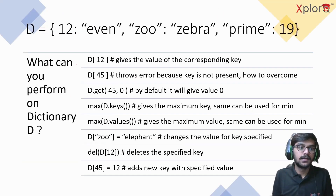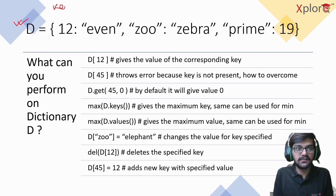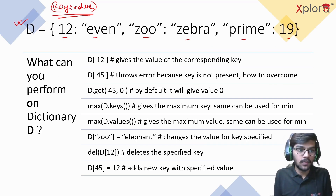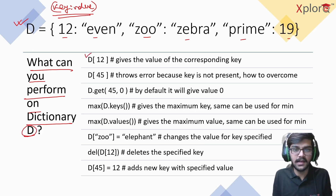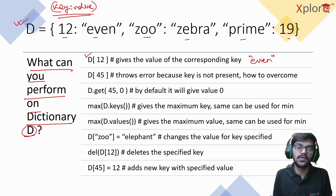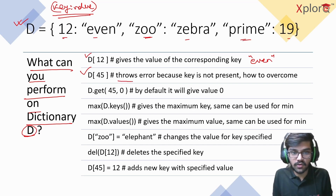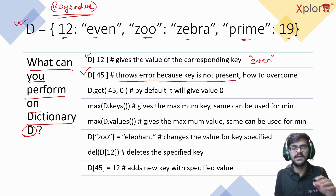Now let's move on to dictionaries. A dictionary has key-value pairs. In dictionary d: 12 is a key with value 'even', 'zoo' is a key with value 'zebra', 'prime' is a key with value 19. The operation d[12] gives the value of the corresponding key, which returns 'even'. However, d[45] throws a KeyError because the key 45 is not present.